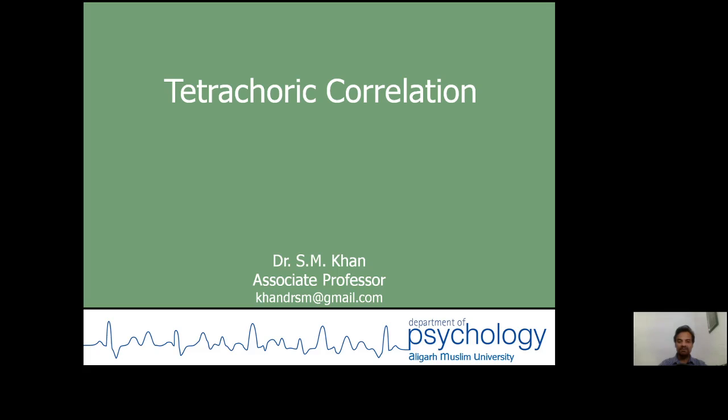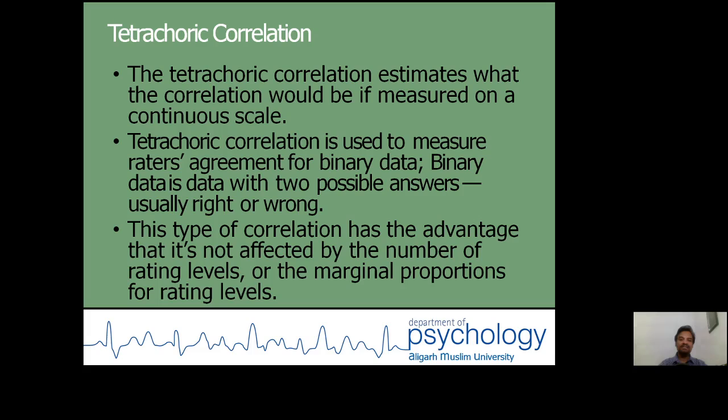I am talking about tetrachoric correlation. This is one of the methods from non-parametric statistical techniques. The tetrachoric correlation estimates what the correlation would be if measured on a continuous scale. Tetrachoric correlation is used to measure raters' agreement for binary data. The binary data is data with two possible answers, usually right or wrong. This type of correlation has the advantage that it is not affected by the number of rating levels or the marginal proportions for rating levels.